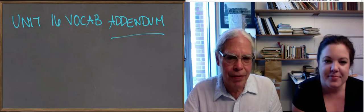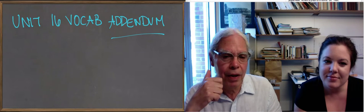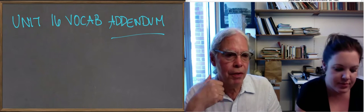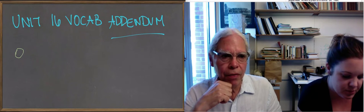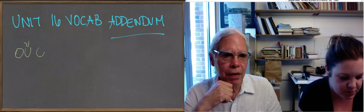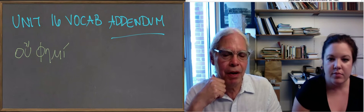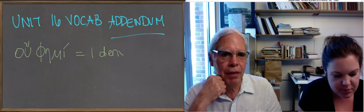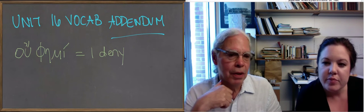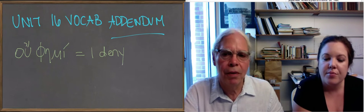So there are two things that I messed up in the Unit 16 vocabulary. One is that the verb φημί—it's really important to know that when you negate φημί, when you say οὐ φημί, it doesn't mean I am not saying. It means I deny, a really important usage.